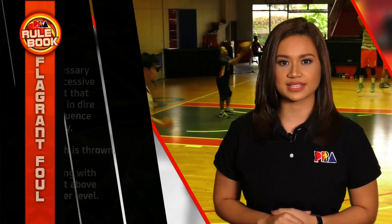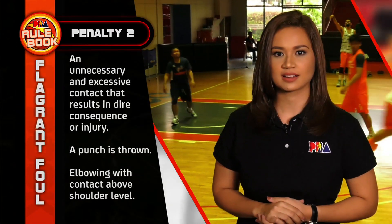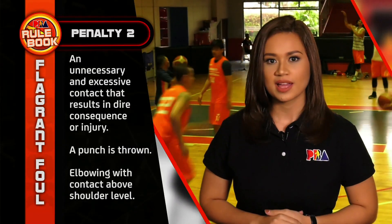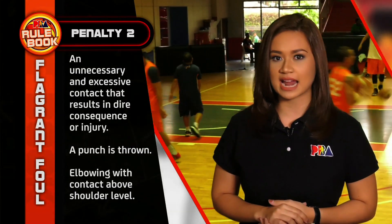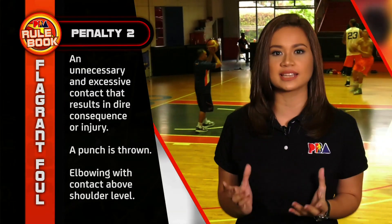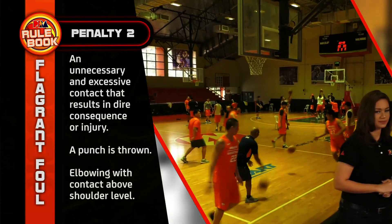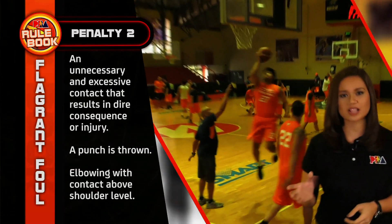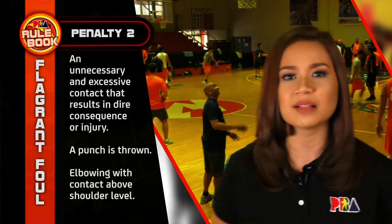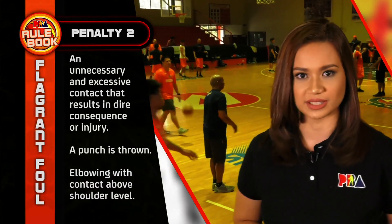Now we go on to the second type of flagrant foul call. The flagrant foul penalty two is an unnecessary and excessive contact which results in dire consequence or an injury. It may also be called when a punch is thrown or when elbowing with contact above the shoulder level.